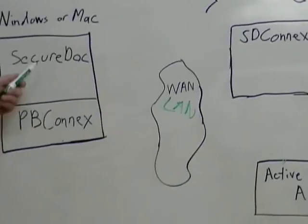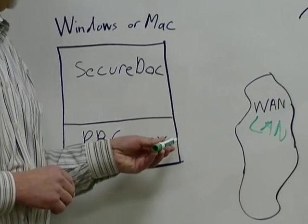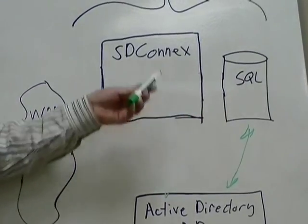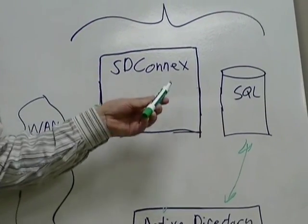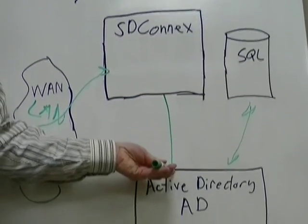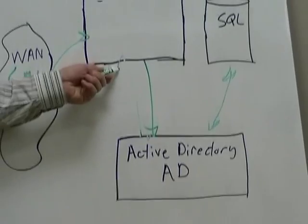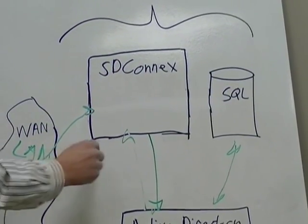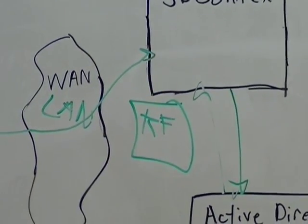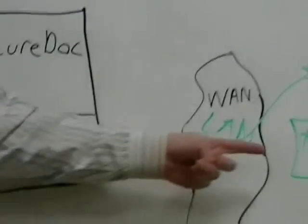The user comes up to the computer and enters their Active Directory credentials. Those credentials are sent at pre-boot — before the operating system is even booted — via the WAN or LAN to SD Connects. SD Connects checks its database, checks its policies, and does authentication and authorization — essentially, should that user be allowed to use the machine. If they should be allowed because they're in the right group, SD Connects sends the credentials to Active Directory for authentication. Active Directory checks the username and password, and if they are correct, returns an OK to SD Connects. SD Connects then creates a key file with the required keys to boot up this machine, sends it to the machine via PB Connects, and the credentials the user entered — the username and password — are used to unlock that key file.